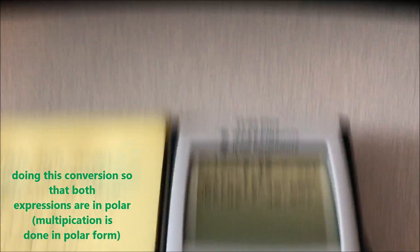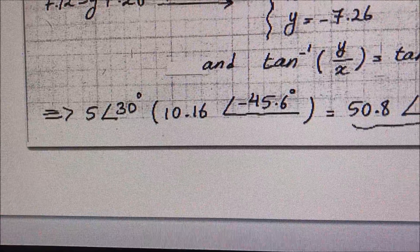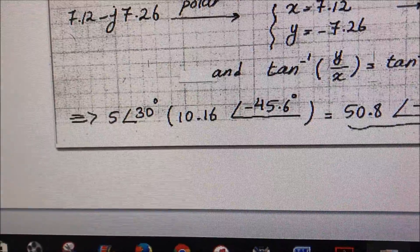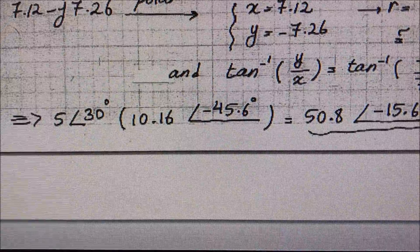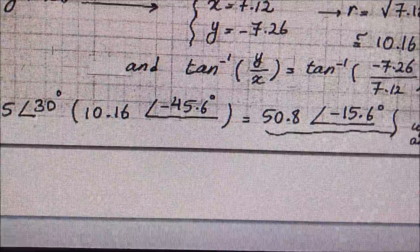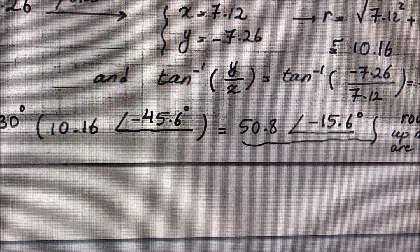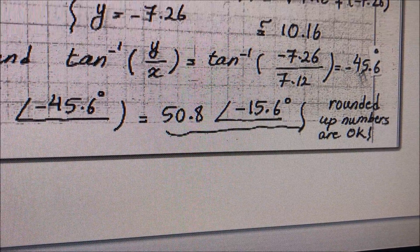As a matter of multiplication, coefficient 5 times 10.16, you multiply that across, gives you 50.8. And angle 30 and angle negative 45.6, it's just addition and subtraction, gets you negative 15.6. That's your final answer in polar.